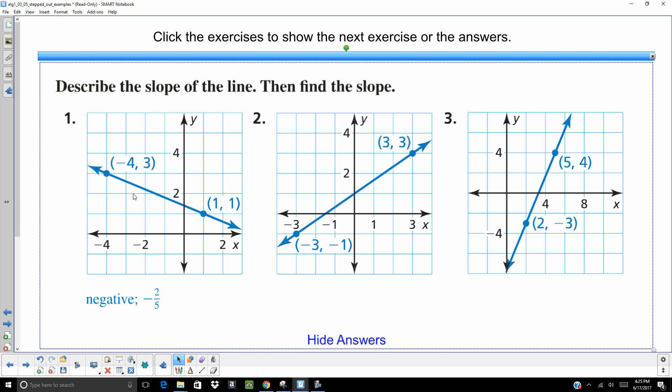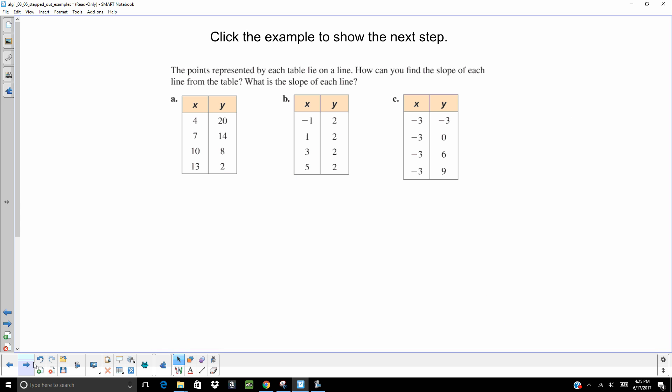Our first one is a negative slope. It's going down 2 units and to the right 5. This is a positive, it is going up 4 and to the right 6. And then when you reduce that, it's going to be 2 thirds. This is a positive slope, 7 over 3. Let's go up 7, right 3.